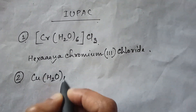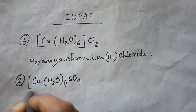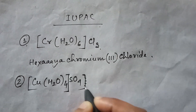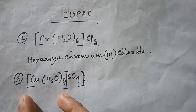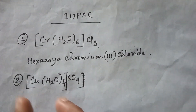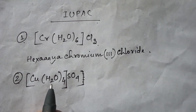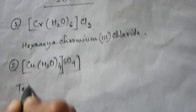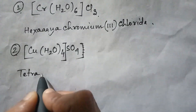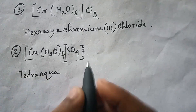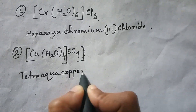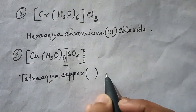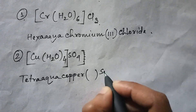Next, take another example: [Cu(H₂O)₄]SO₄. Again, the first part is the coordination sphere part and the second part is the counter ion. Here the ligand is H₂O with 4 present, so write 'tetra', and H₂O is 'aqua'. This is copper, so write 'copper'. After writing the metal, write the oxidation state and then the counter ion part, which is sulfate.